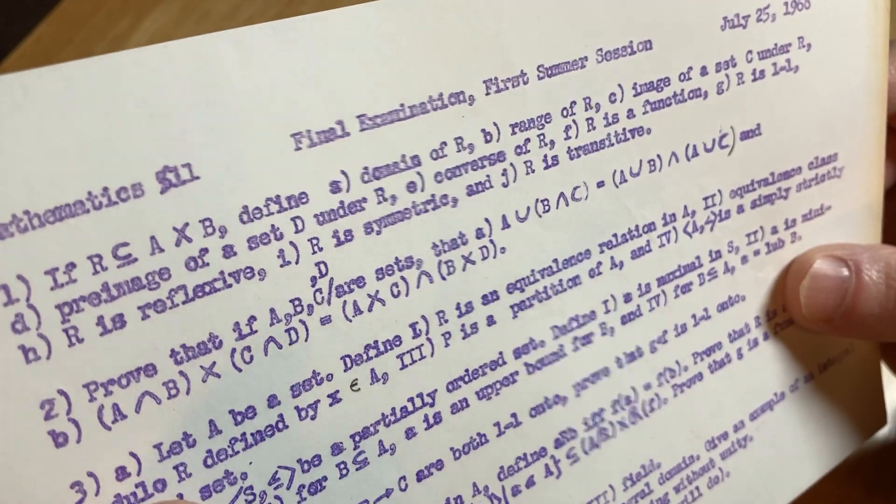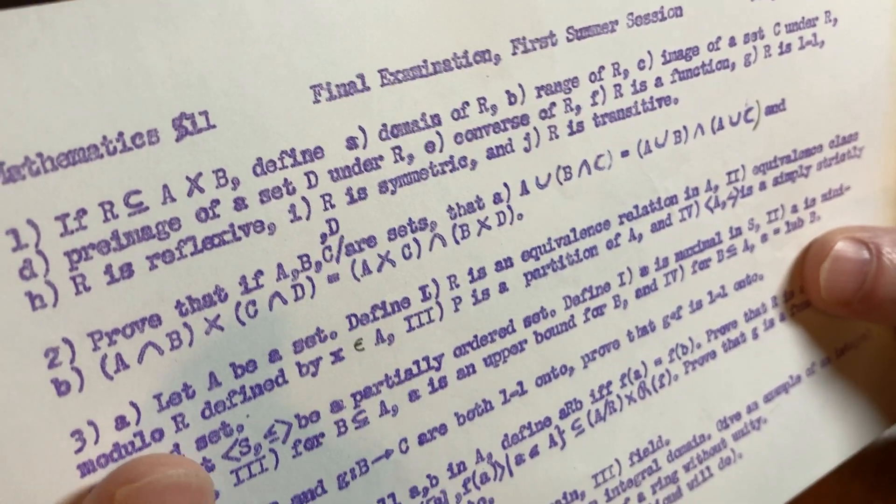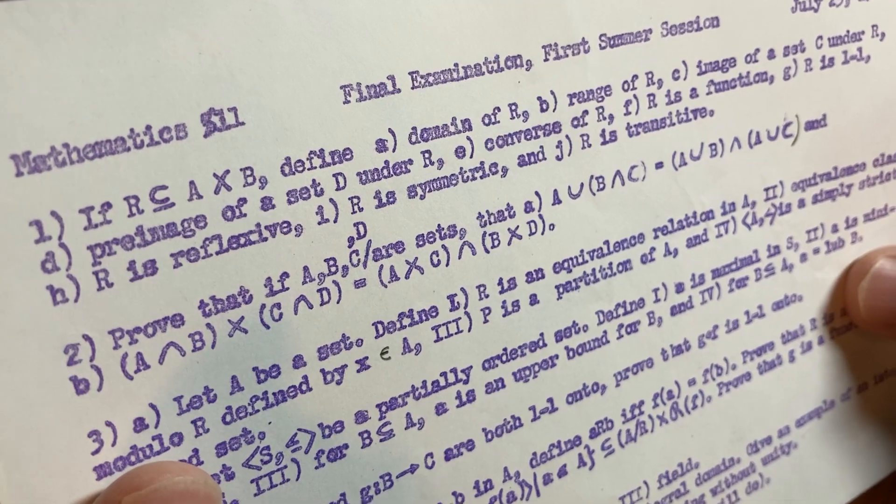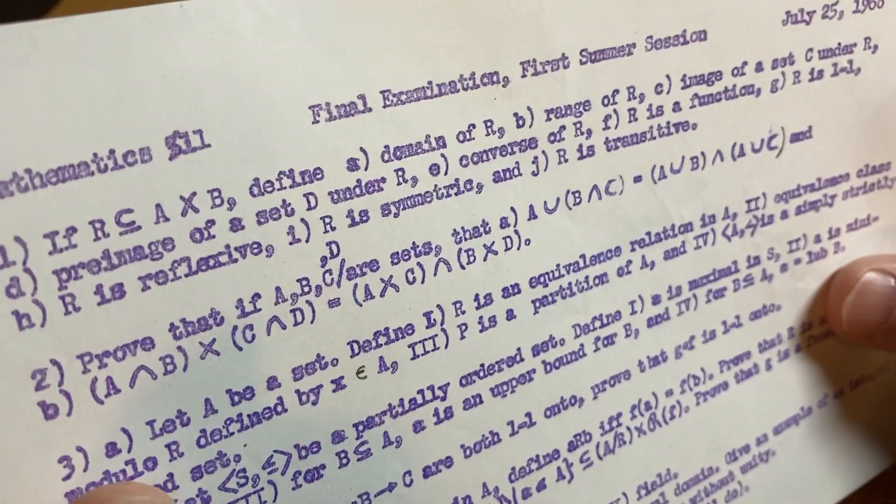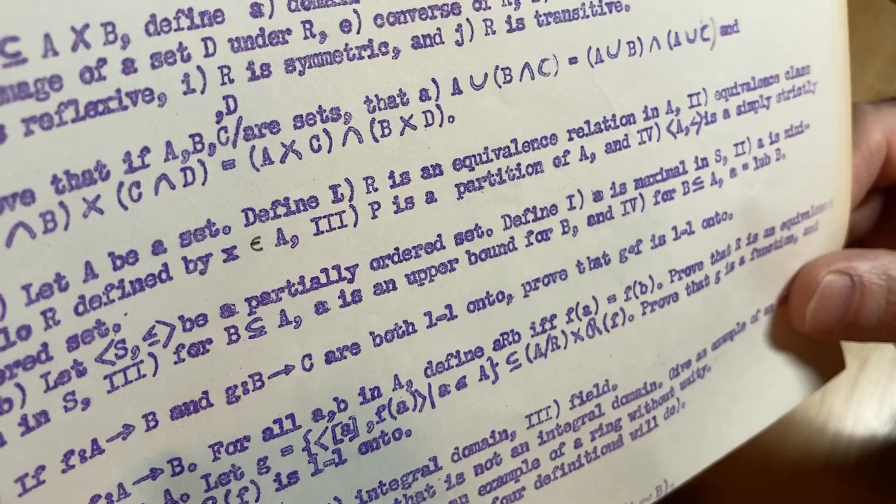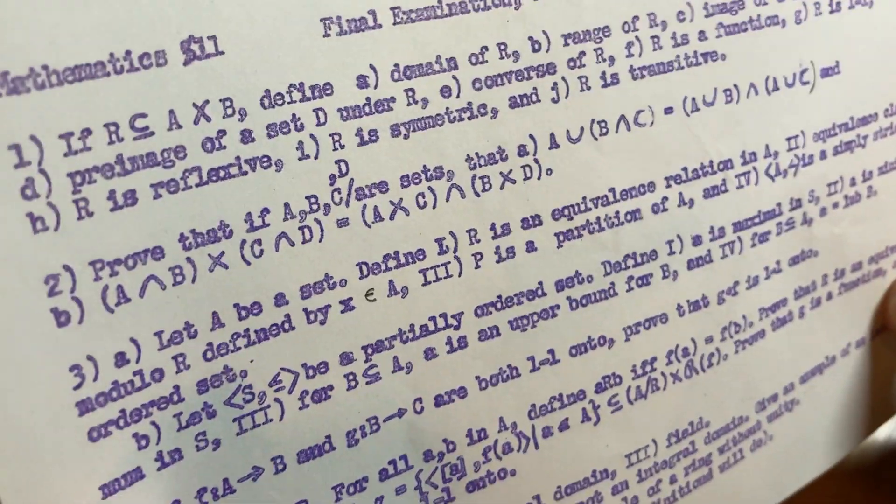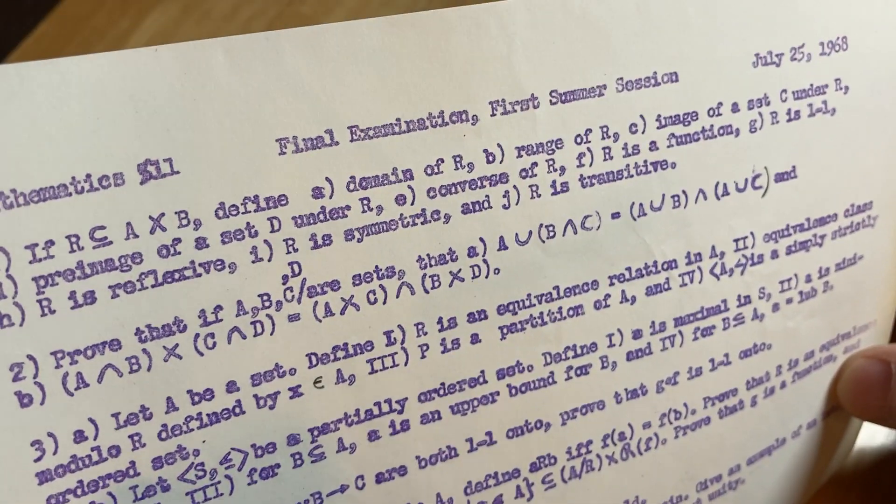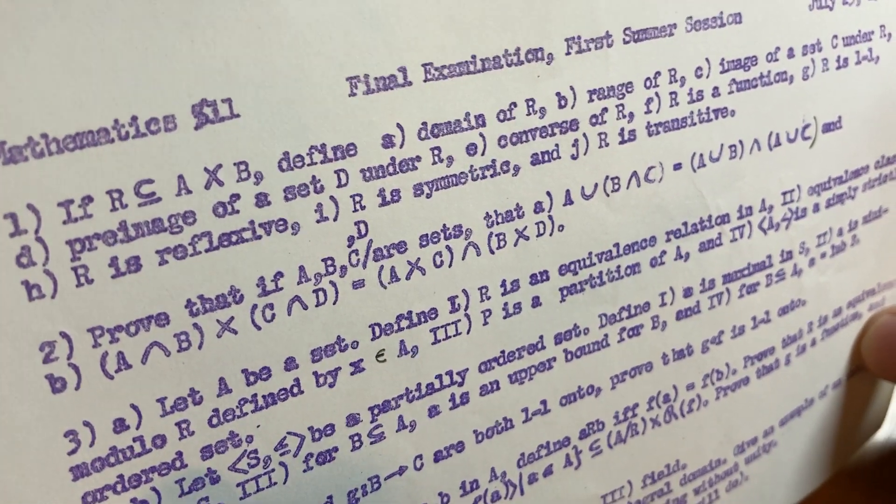Prove that if A, B, and C are sets, and then it's a pretty simple proof, nothing too bad. That's pretty good. The first two questions I think are pretty good. I don't think they're overly challenging or anything like that. I feel like it's the right level. It's good.